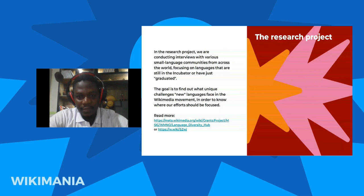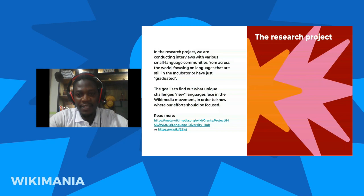Last year we applied for the Movement Strategy Implementation Grant, and we were one of the selected communities to embark on the research project. Part of the project involves working with indigenous language communities selected from various parts of the world, to understand how the hub project will look like and how we can better support these communities. We are at the early stage of the research, even though we have started engaging some of the communities, and I will be sharing more about the communities we have selected to work with.